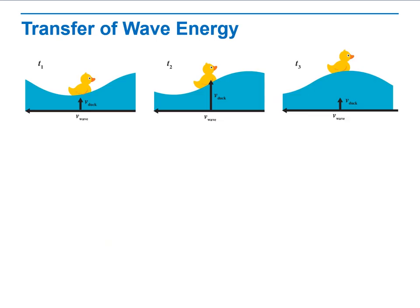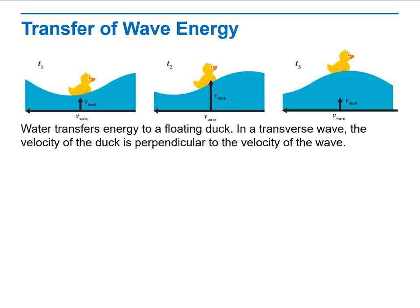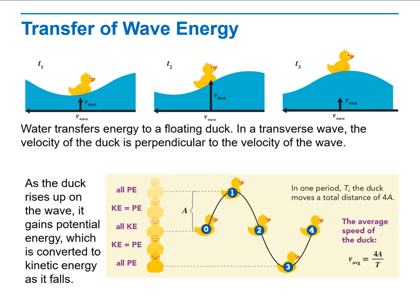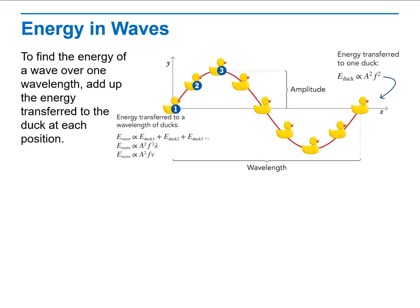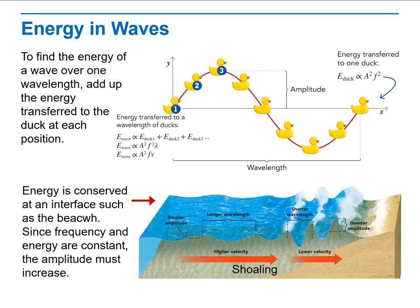And finally, transfer of wave energy. Water transfers energy to a floating duck in a transverse wave. The velocity of the duck is perpendicular to the velocity of the wave. We will discuss potential energy versus kinetic energy in each position here. And last but not least, energy in a wave. If the energy is conserved at an interface such as the beach, which, since frequency and energy are constant, the amplitude must increase.